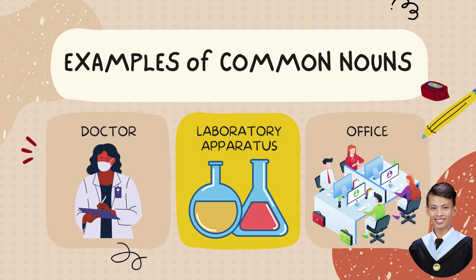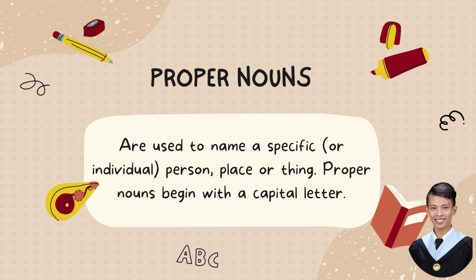Also, let us remember that common nouns can be divided into smaller classes: countable and uncountable nouns, as well as concrete and abstract nouns. We will know these types later as we go on with our lesson. For now, let's proceed to our second type of noun, which is proper nouns.